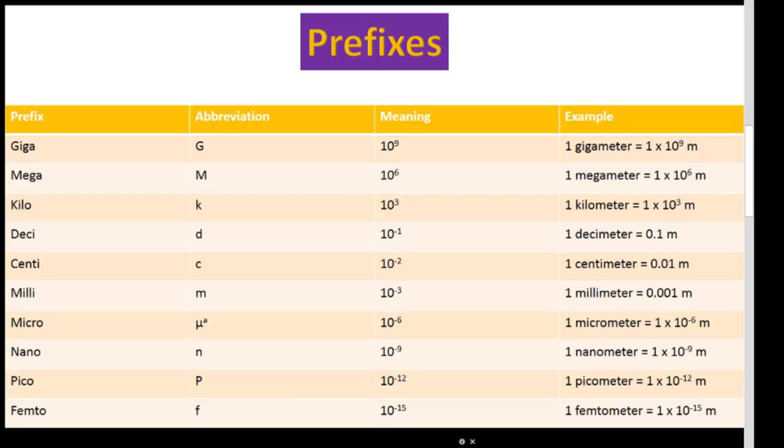For example, one kilometer equals one times ten to the three meters, which means one kilometer equals one thousand meters. Or, one centimeter is equal to point zero one meters. This shows how we can use different prefixes to show different quantities.